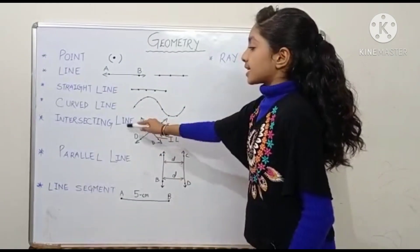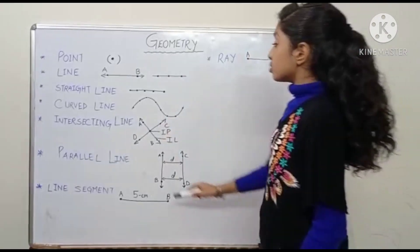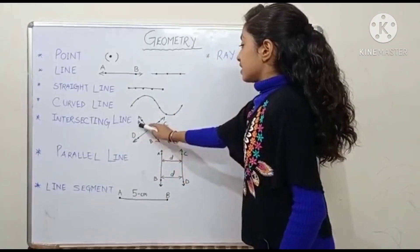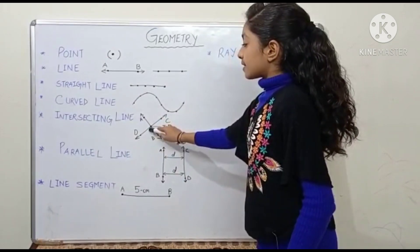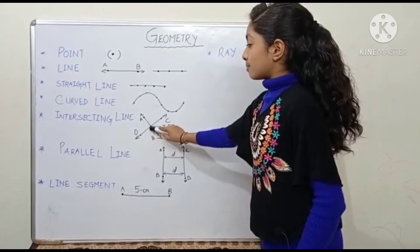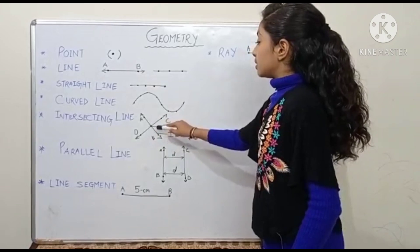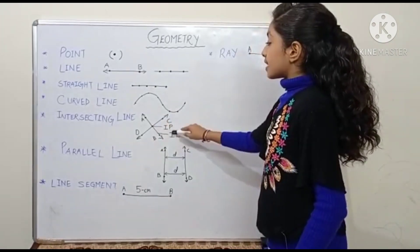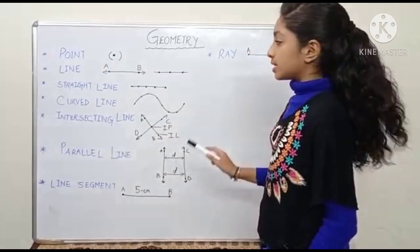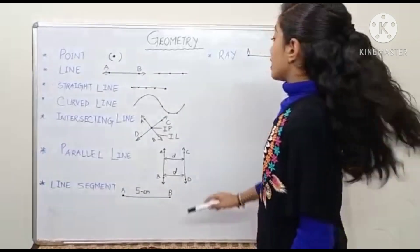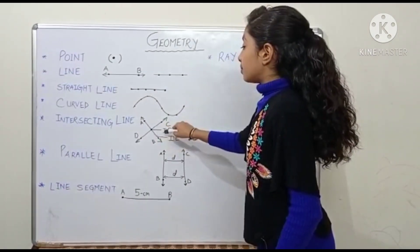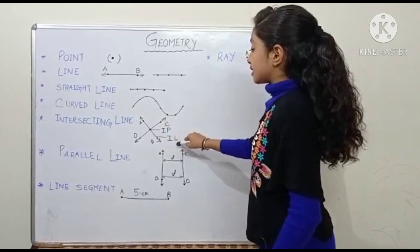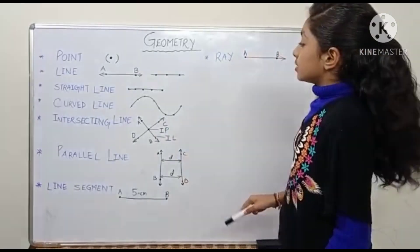Now, intersecting line. So here are two lines, AB and CB. Both lines are intersecting at this point, black point. So this point will be called as intersecting point or intersection point. And the lines which are getting intersect in a point is called intersecting line.